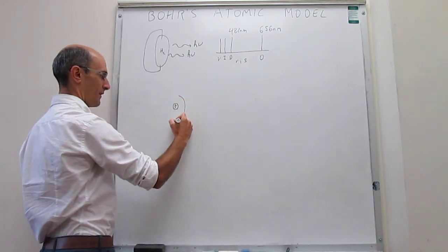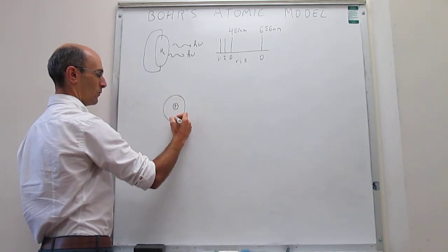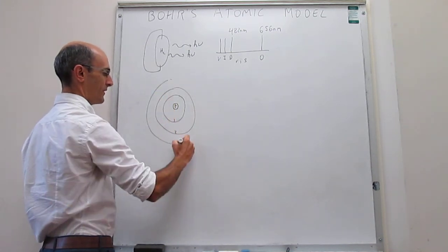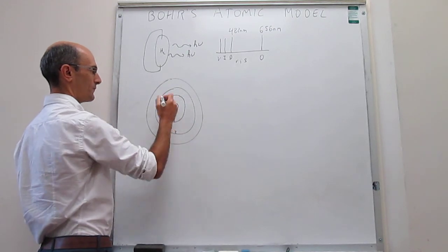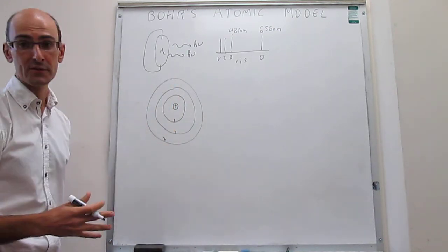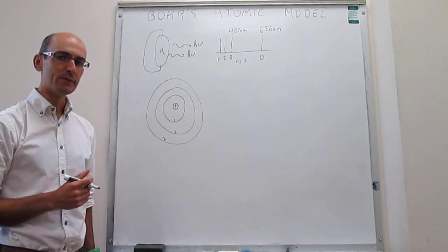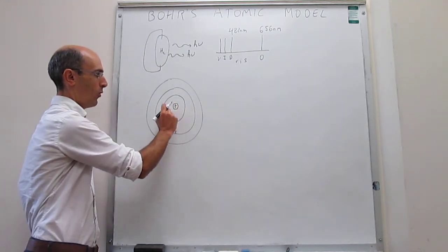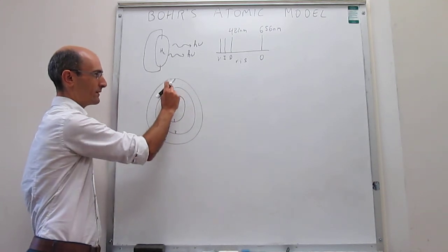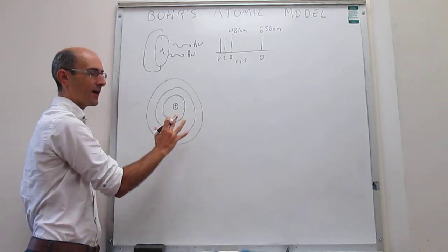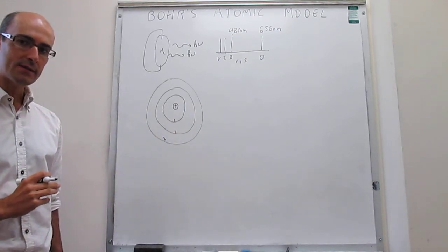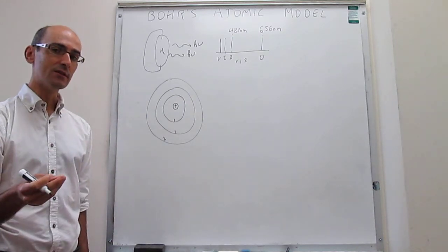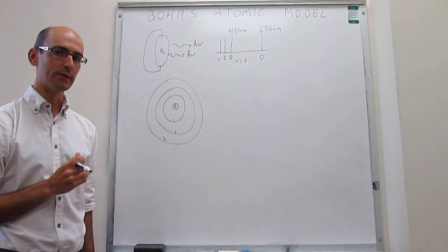For example, this would be the first orbit, which we call n=1, then the second orbit n=2, then the third, and so forth. In principle, there would be a large number of orbits. The orbits have these specific radii and not others. And if the radii are very well defined, then the energies of those orbits are also very well defined, because you have a negatively charged electron being attracted by a positively charged nucleus, and the energy depends on their separation.